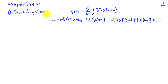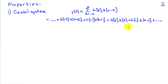First, we're going to look at causality — what it means for a system to be causal. Writing out this infinite sum, keeping some of the terms near k equals zero, we have: h of minus 2 times x of n plus 2, plus h of minus 1 times x of n plus 1, plus h of 0 times x of n, plus h of 1 times x of n minus 1, and so on. For a system to be causal, the output at time n can only depend on the input at time n and previous times. So x of n plus 2 and x of n plus 1 are future values of the input.